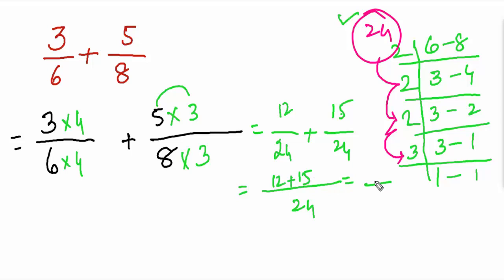Further simplification we will do in this way: 27 divided by 24. 24 into 1 is 24,